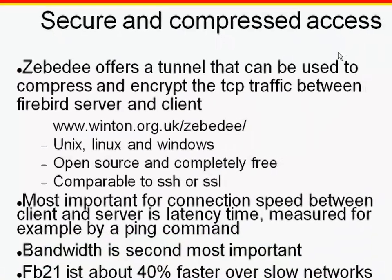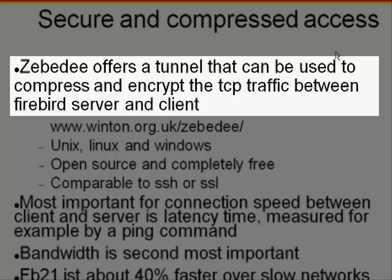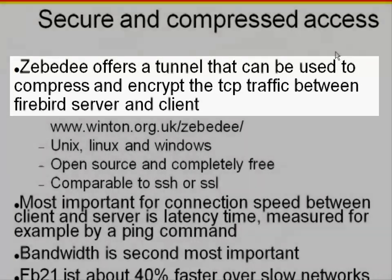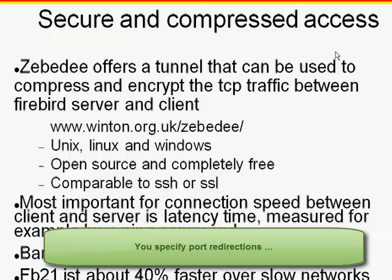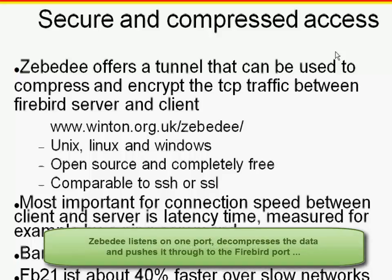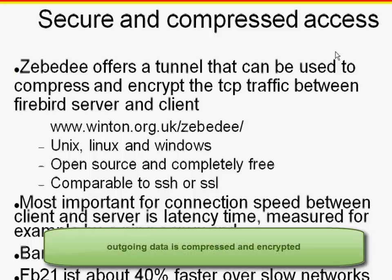Alternatively, there is an excellent free tool on the market — Zebedee — offering a tunnel that can be used to compress and encrypt the TCP traffic between the Firebird server and the client, similar to SSH or SSL. Basically, you have a small piece of software sitting on the server and on the client. You need to specify some port redirections, and it listens on one port, decompresses the data, and pushes it through to the correct port where the Firebird server or Firebird client can be reached. By return, it compresses and encrypts data going out.